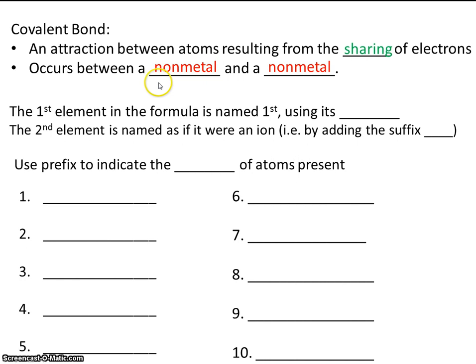So if you see a metal — if there's a metal involved — you know right away it's an ionic compound. If there's only nonmetals involved, that will be a covalent bond.